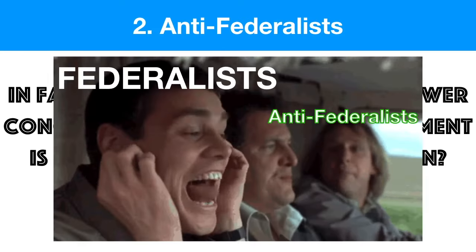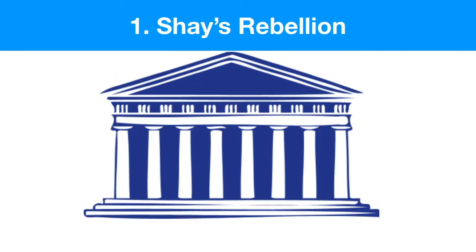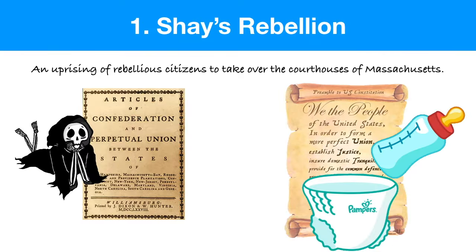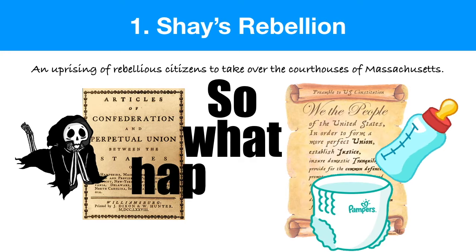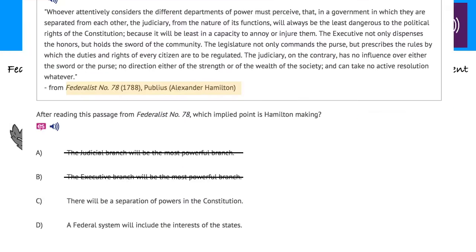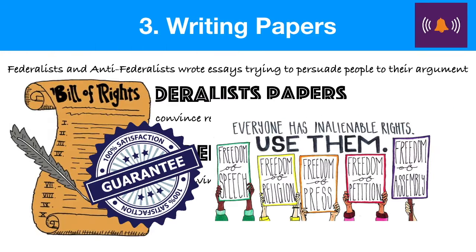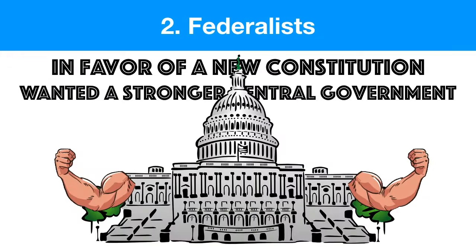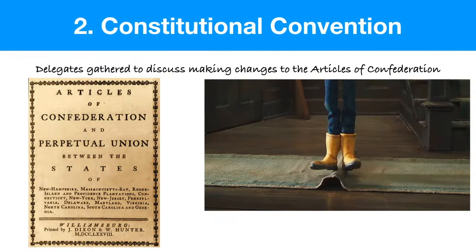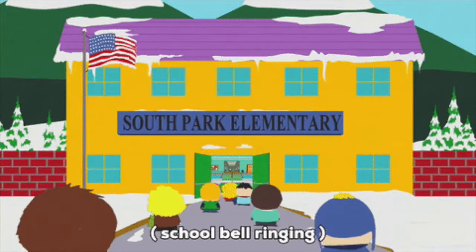Hey everyone and welcome back to Civics Review. Today we're going to be talking about the Federalists and Anti-Federalists and their big argument about how we should make our new constitution, or if we should make a new constitution at all, or try to fix the Articles of Confederation. Let's get to it.